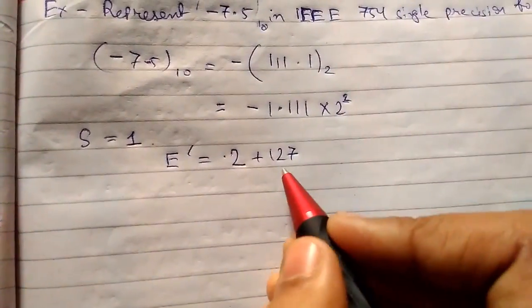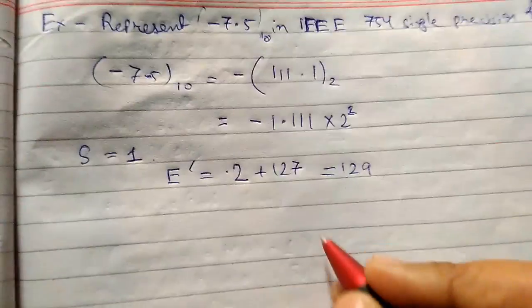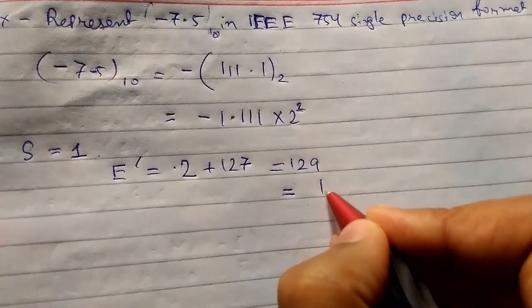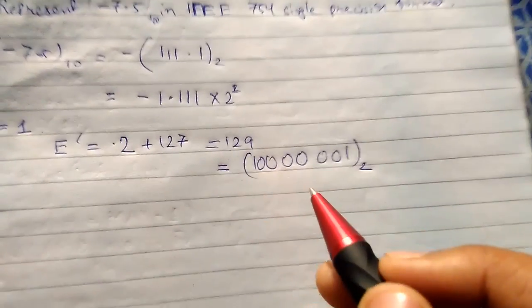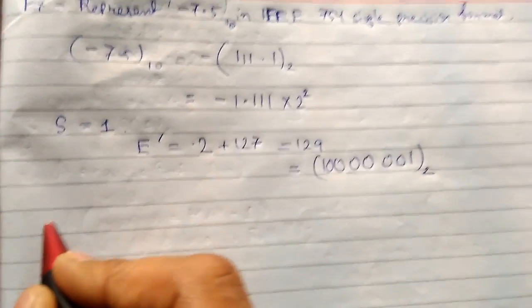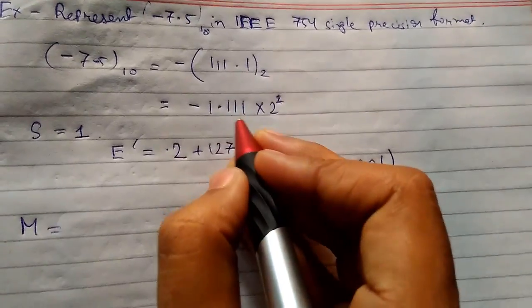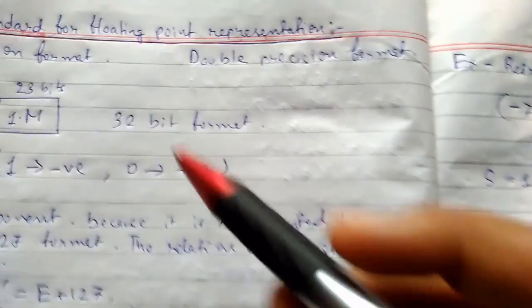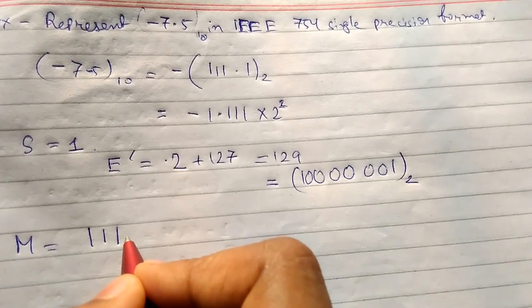So E-bar = 2 + 127 = 129. Now we need to convert 129 into binary — you can do it in rough. This is the converted binary number for 129. For the mantissa, we write the mantissa bits and then the remaining zeros. The mantissa size is a total of 23 bits.